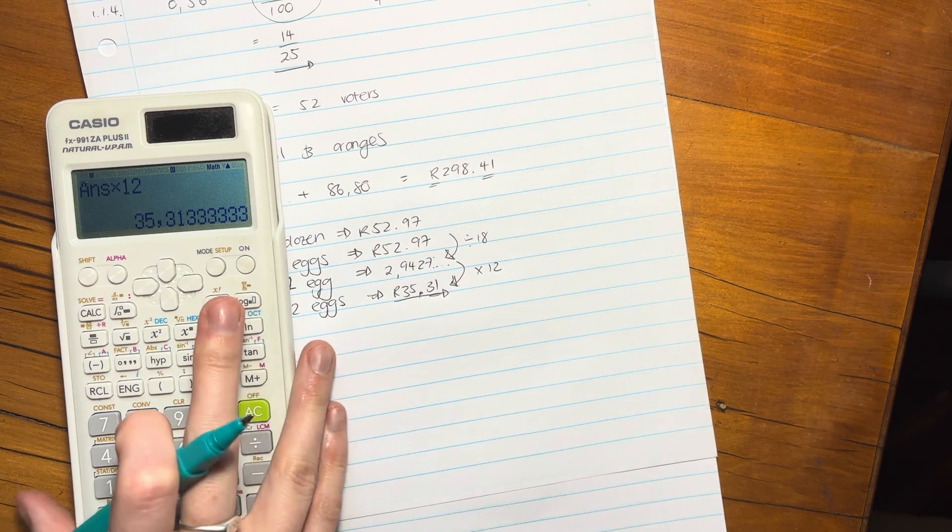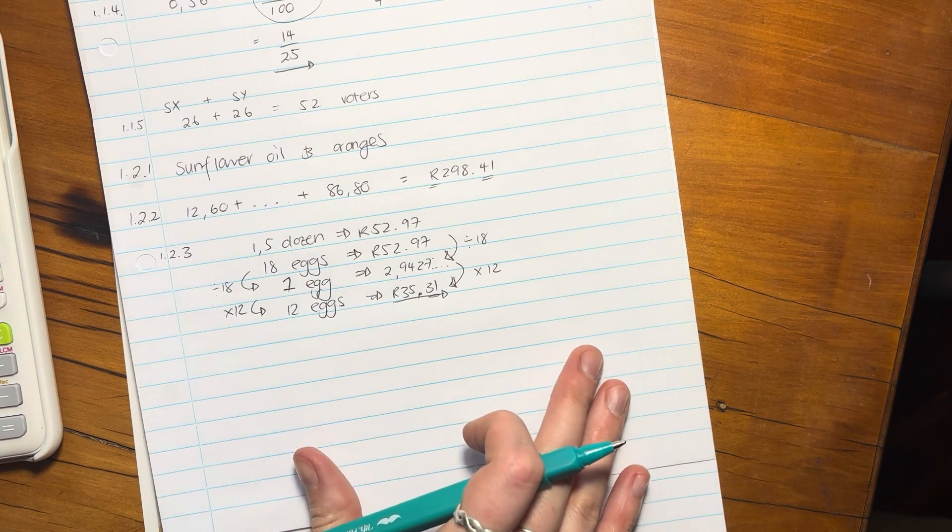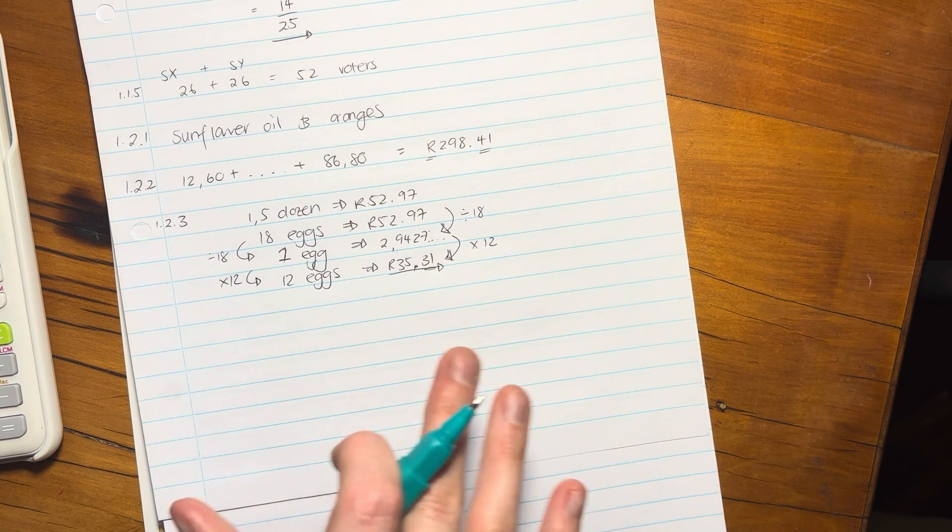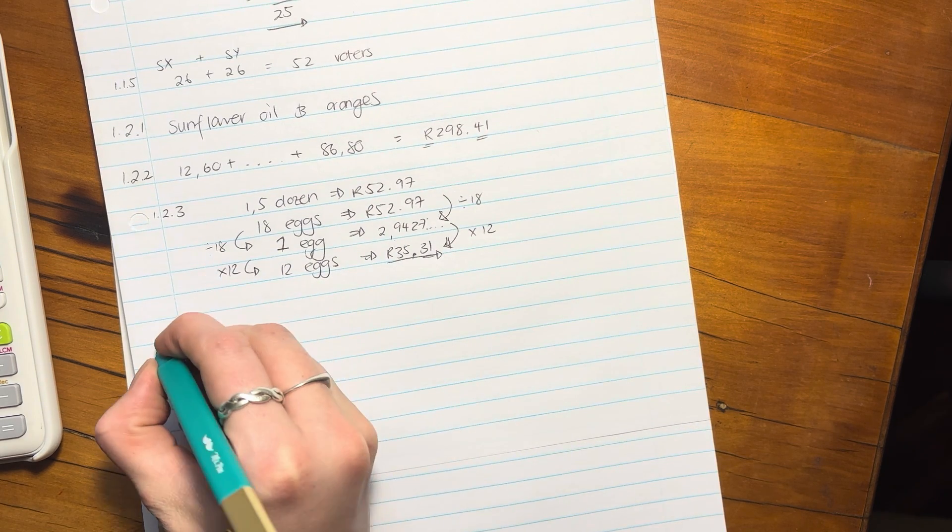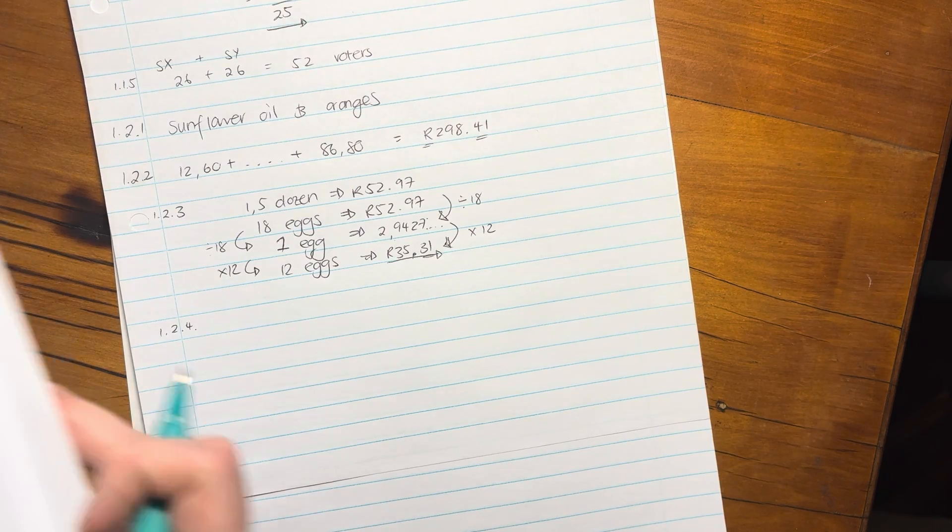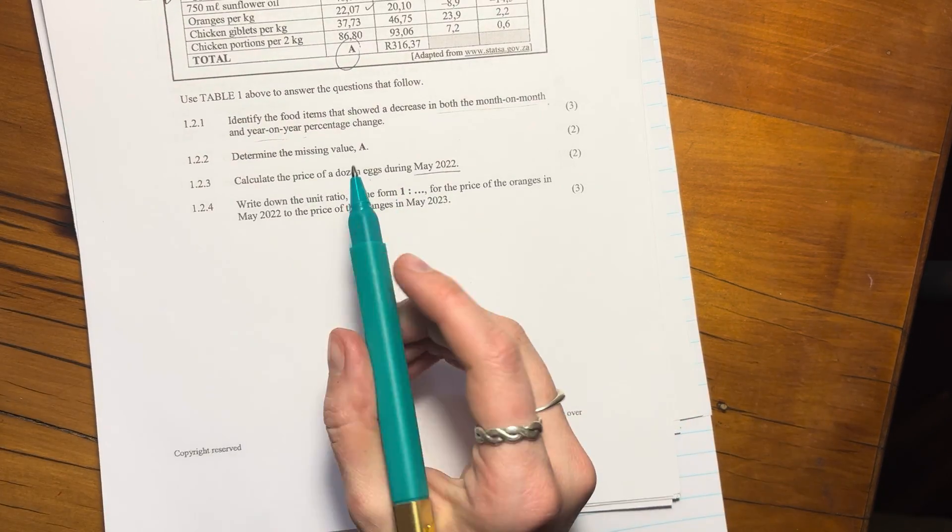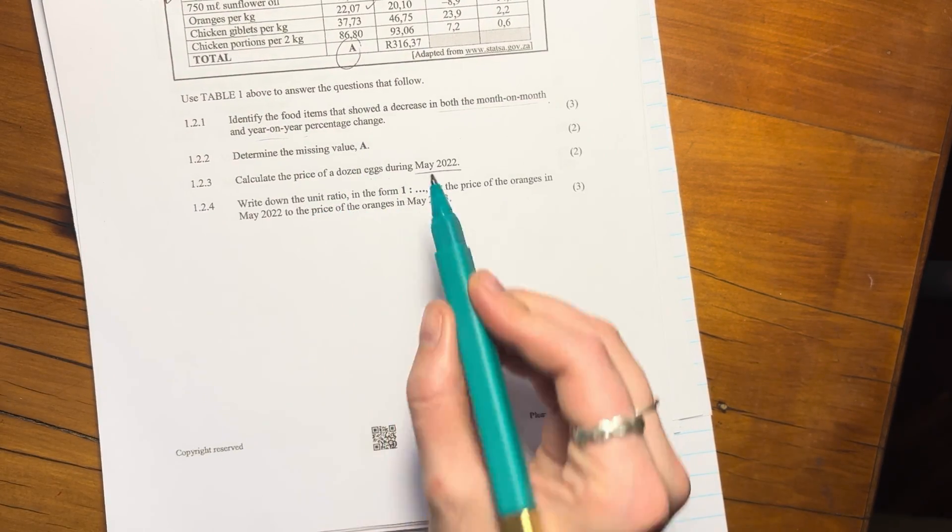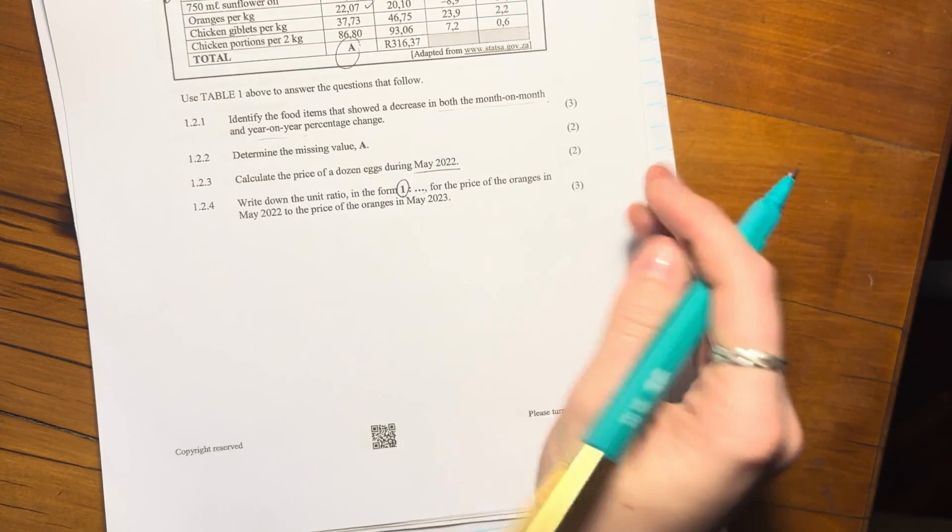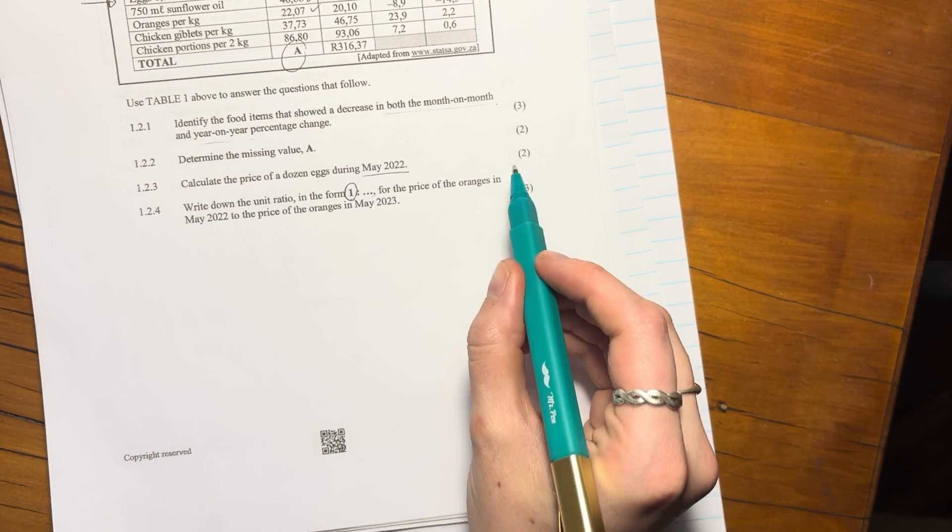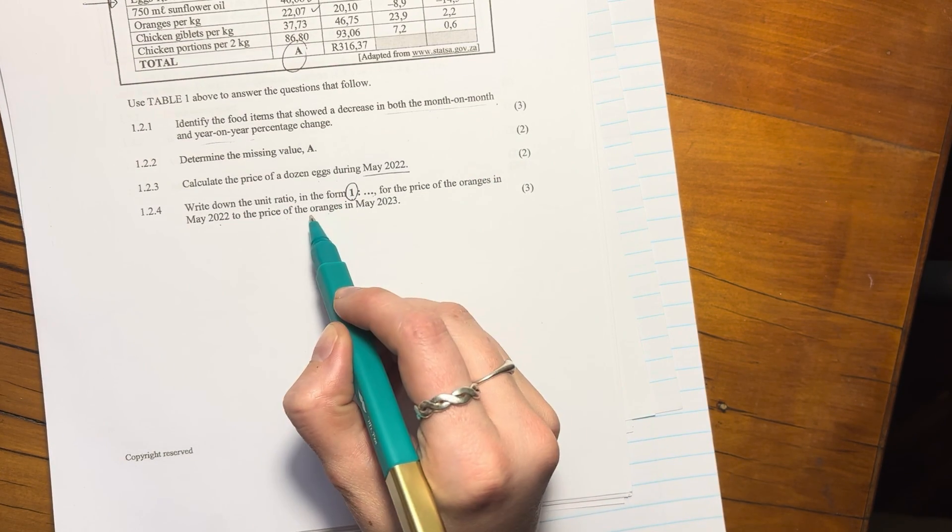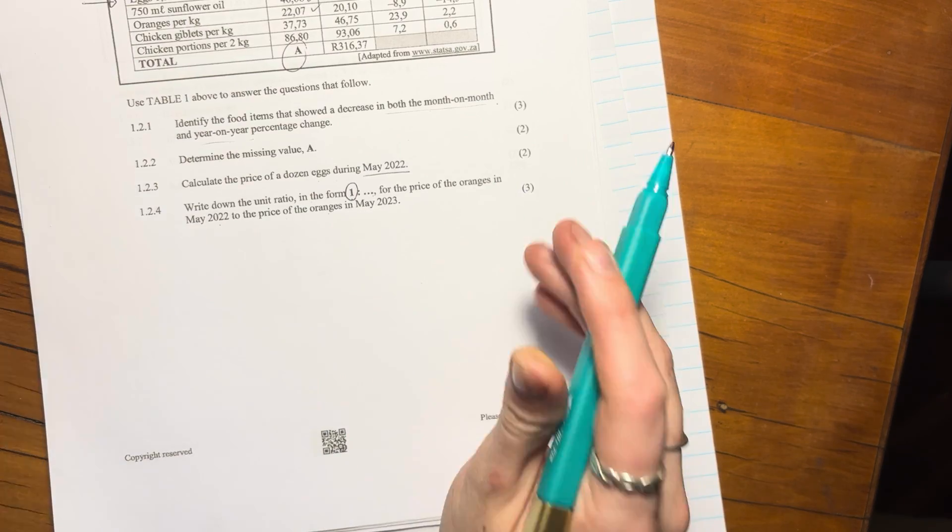There's other ways of doing this. You can go look in the memo. This, for me, flows quite nicely. It's quite intuitive. So I hope that made sense to you. Let's go to the next question here and the last one for this video. So write down the unit ratio. Unit ratio means in the form one to something, so this leading number has to be one. For the price of oranges in May 2022 to the price of oranges in May 2023.